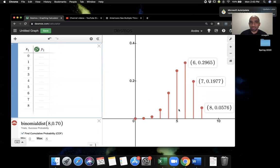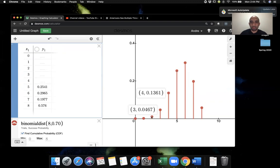So bear with me as I go back and forth. So 0.0576, 0.1977, 0.0576, 0.1977. Let's turn this off. We want to plot the points here. 0.2965, 0.2541, 0.1361, 0.0467. And we have three more, 0.01 for the probability corresponding to 2, 0.012 corresponding to 1, and 0.0001.